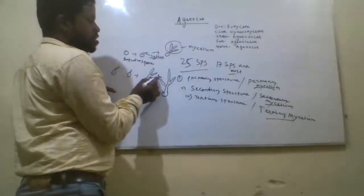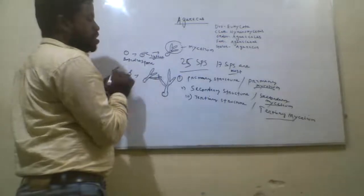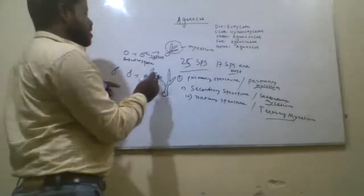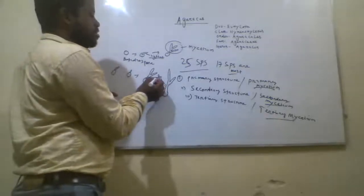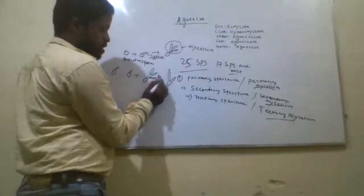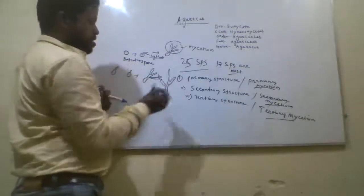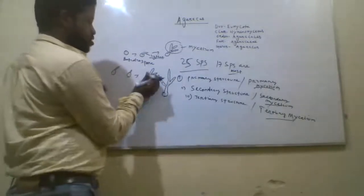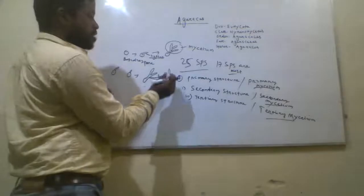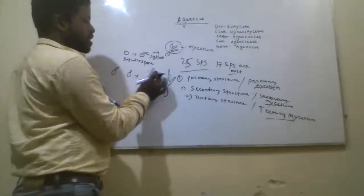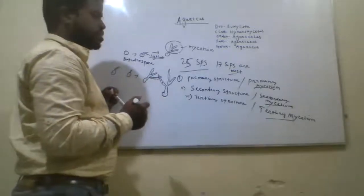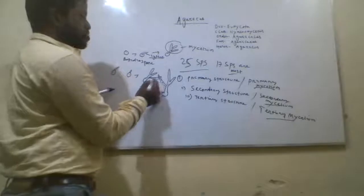Whatever cytoplasmic content is present in one hypha is transferred to the other. The nuclei are also transferred. For drawing purposes, one nucleus is black and the other is blue. When they cross with each other, the blue nuclei and black nuclei unite — this is called dikaryotization.